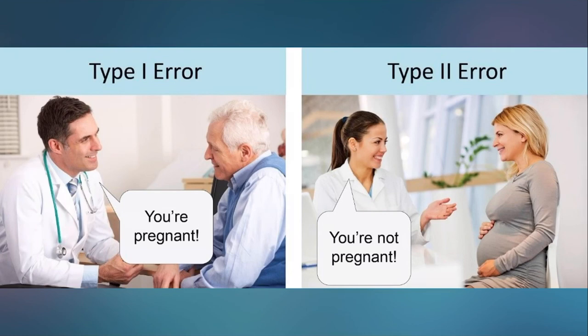Here's a great example. Type 1 error is a false positive — 'You're pregnant, yay!' Type 2 error is a false negative — she's clearly pregnant but you say otherwise. Type 1 error is a false positive. Type 2 error is a false negative.